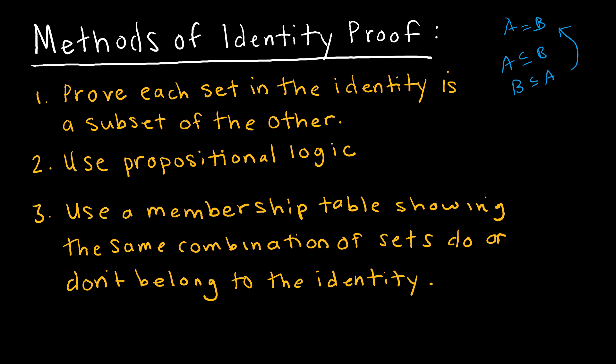The second method is to use propositional logic. This is probably my least favorite, but it looks more like a two-column proof that we used previously when looking at properties in propositional logic. Something brand new is to use a membership table, which shows the same combinations of sets do or don't belong to the identity on each side.